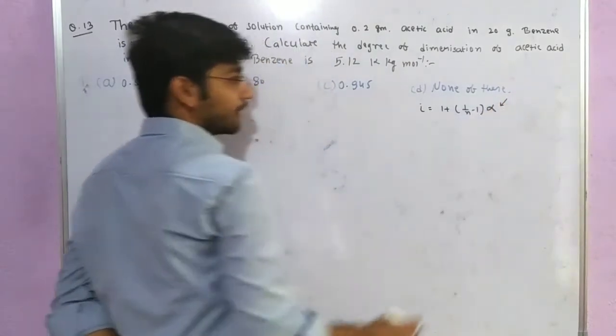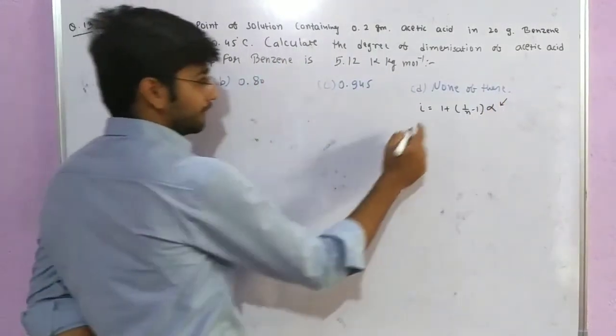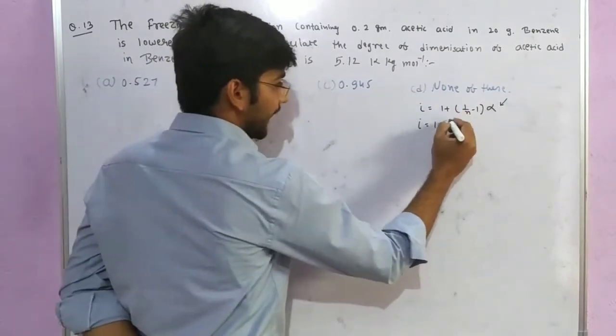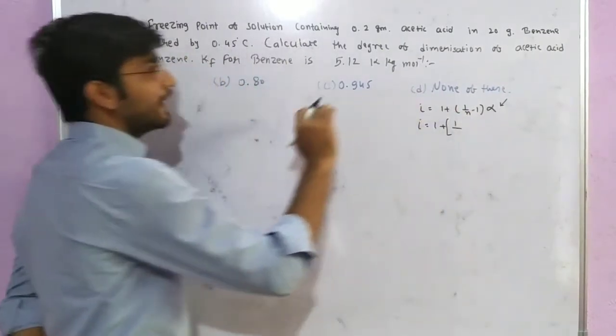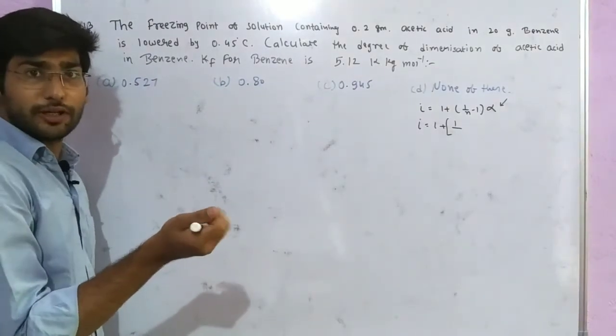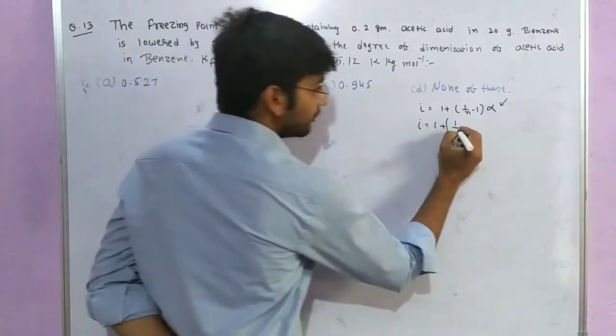To calculate alpha, we need i. Now n is what? For dimerization, when two molecules associate or combine, n equals 2.